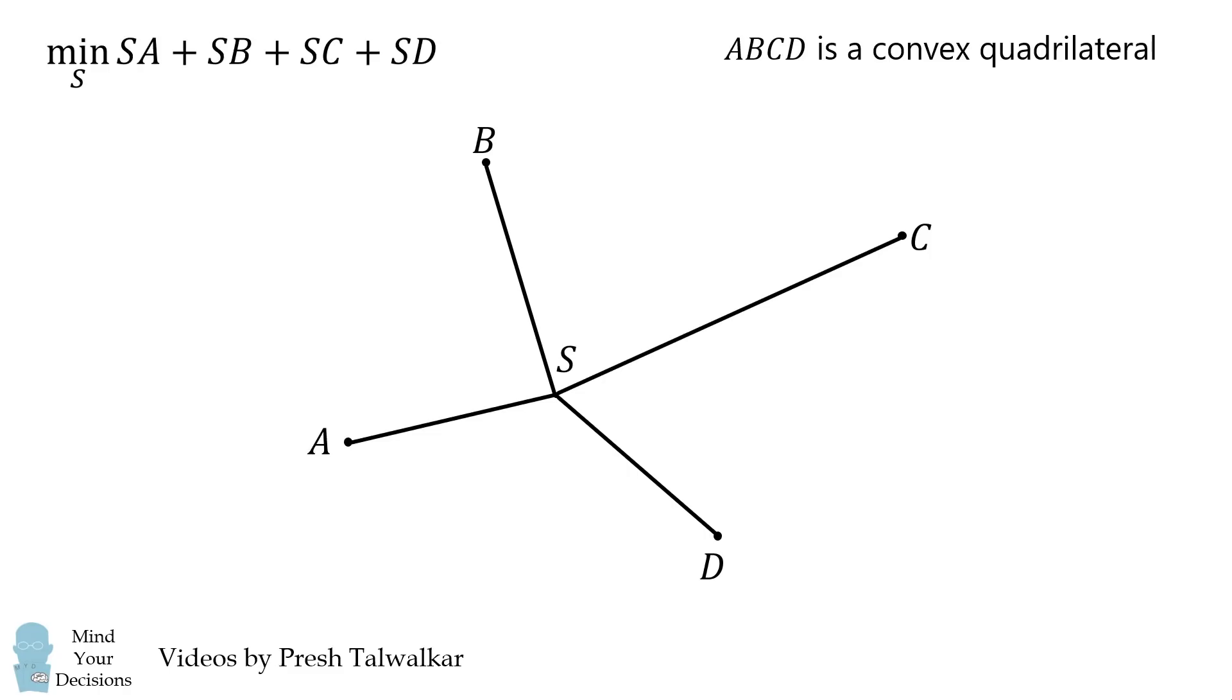Imagine we have four points in the plane that form a convex quadrilateral. We want to determine the point S such that the sum of distances to these four points is a minimum value. We will prove the rather fascinating result: S will be at the intersection of AC and BD.